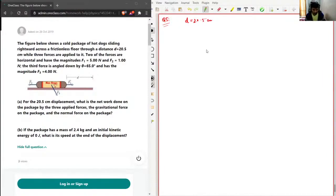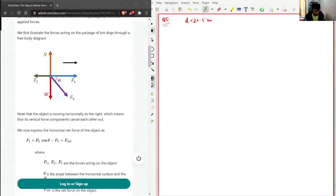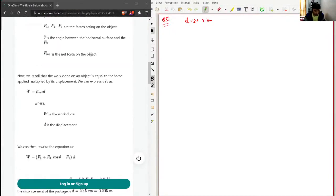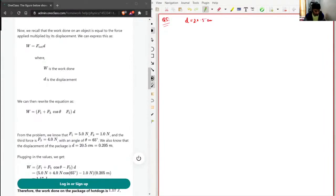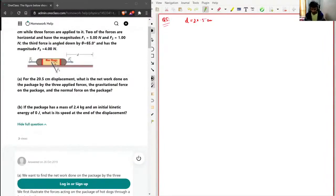I will first look at the solution given by junior tutor. So work done they have calculated, okay, so they have first resolved these forces. So I'll just draw a vector diagram, free body diagram for this. Let's say this is the point mass or the hot dog bag. This is F1 and this is F2, this is F3.